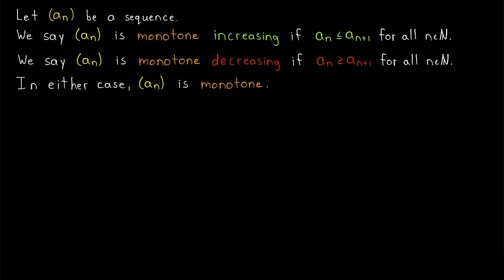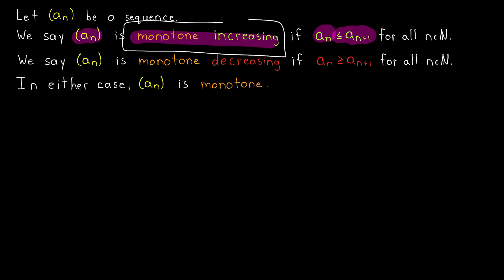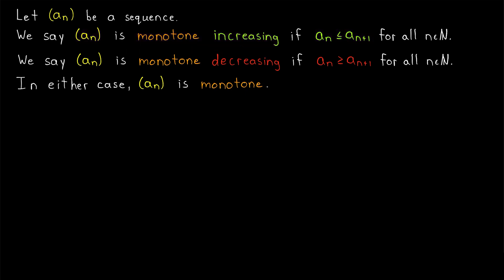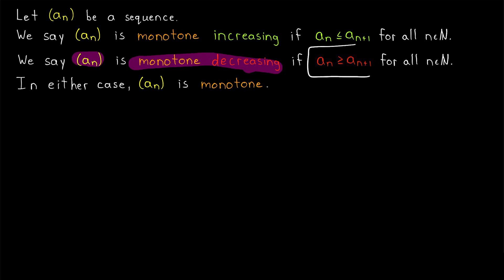Let's say that a_n is a sequence. Then a_n is monotone increasing if every term a_n is less than or equal to the next one, a_{n+1}. So in a monotone increasing sequence, the terms can only move in one direction — they're either staying the same or moving up. Similarly, we say that a_n is monotone decreasing if each term a_n is greater than or equal to the next term a_{n+1}, so each term can either stay the same or decrease.